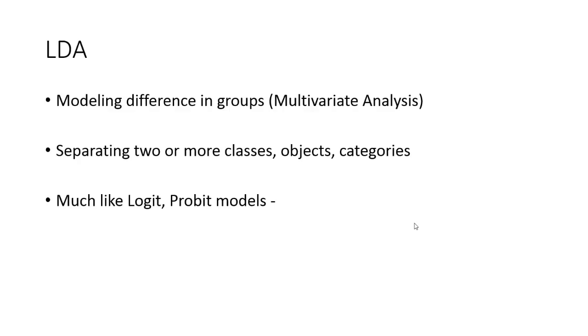We use more than or equal to two variables to do the modeling work. What we usually do is that we build a model to separate two or more classes, objects, or categories. So discriminant analysis is more like a classification technique like logit or probit model.